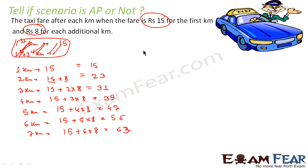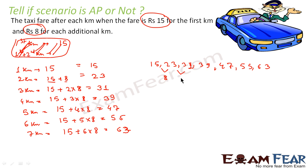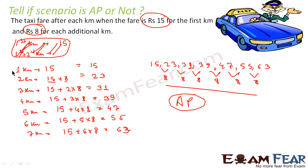If you write these terms — 15, 23, 31, 39, 47, 55, 63 — and find the common difference: 23 minus 15 is 8, 31 minus 23 is 8, 39 minus 31 is 8, 47 minus 39 is 8, 55 minus 47 is 8, and 63 minus 55 is 8. The common difference is constant at 8. Thus, this is an AP. We found the total cost for 1 through 7 kilometres and confirmed that the common difference is constant.